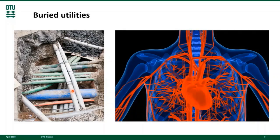Similar to pavements, humans contain a wide variety of pipes, cables, and tubes. The nervous system is a network of wires transferring electrical signals. Liquids are transported by our blood vessels and urine system. We can also transport gases, for example, in our respiratory system. We are able to transport light, at least the effects of light, via our eyes and skin.